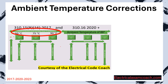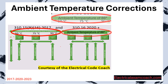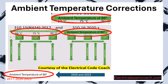Let's take another look at our primary ampacity table. In the last lesson, we learned about the first part of the note at the top of the table — that these values are true as long as you don't have more than three current-carrying conductors. There's a second piece: in the 2017 code it's at the top, and in the 2020 and 2023 it's at the bottom. It states these values are true as long as you're in an ambient temperature of 86 degrees Fahrenheit. Any time you get outside of that, you'll need to do an ambient temperature correction.